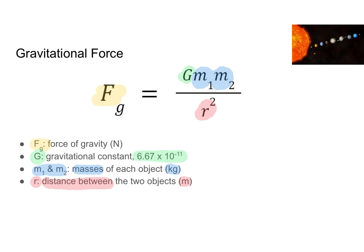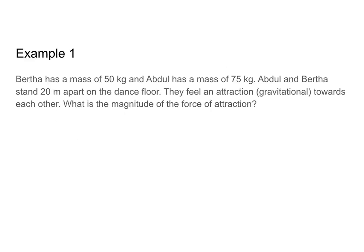Before I get into an example, one thing I want to mention is that it does not matter which object is M1 and which one is M2, because M1 times M2 is the same as M2 times M1. So it doesn't matter which object we assign where, as long as you're consistent as you solve the question. So without further ado, let's go ahead and do an example question.